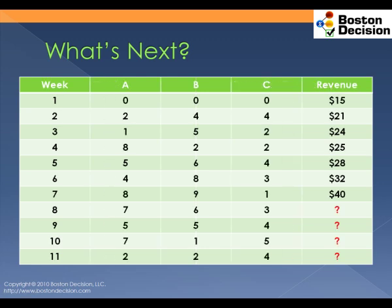Unfortunately, organizations are a lot more complex than what may initially meet the eye. In this example, there are three other variables that we suspect may be influencing revenue, denoted by A, B, and C. Do you notice any pattern between A, B, and C, either individually or together, in terms of how it may be impacting revenue? Most folks will not be able to see a pattern, even though there is a very simple relationship between them.